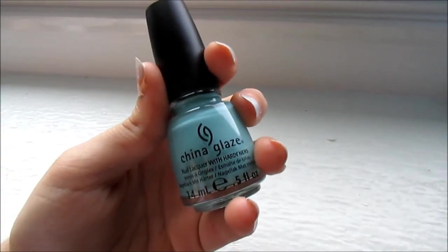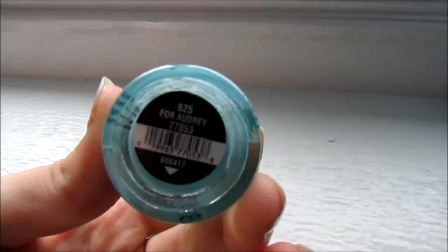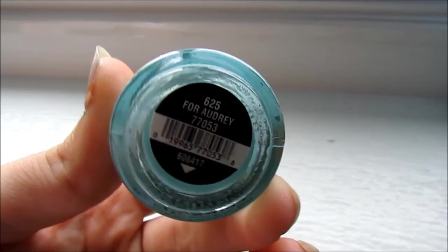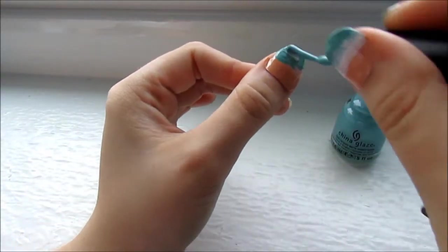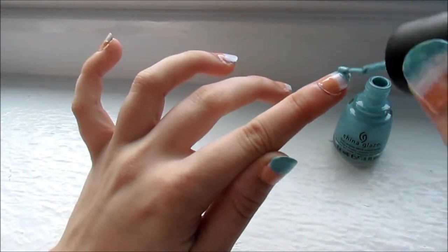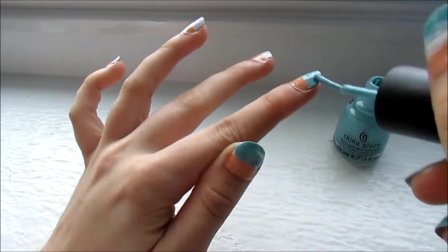The third step is to grab your blue nail polish. I am using China Glaze For Audrey. Paint the blue on the upper half of your nails. Make sure it is right next to the brown and it is okay for some white to be showing through because we will be adding white over this later.